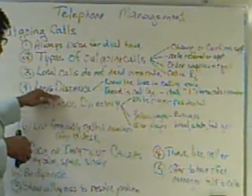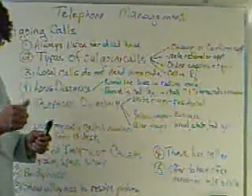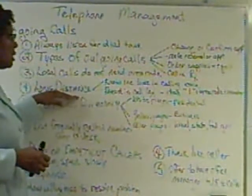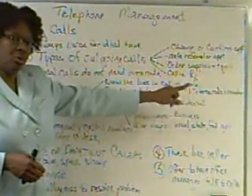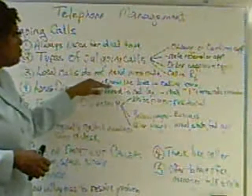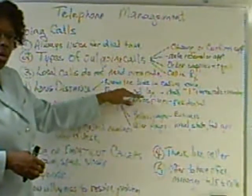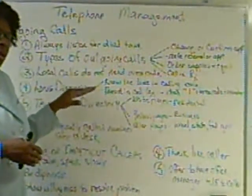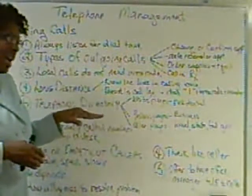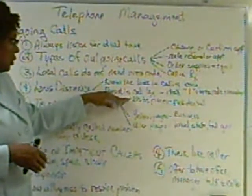For long distance calls, because many of us have never really had to deal with landlines before, with long distance calls you do have to dial one, plus the area code, plus the number. In most practices, you will record all of your long distance calls in a call log. Those call logs will generally have the name of the person you're calling, the reason for the call, and the time of the call.